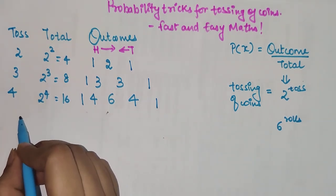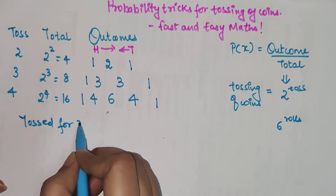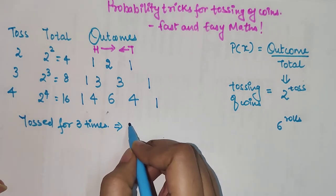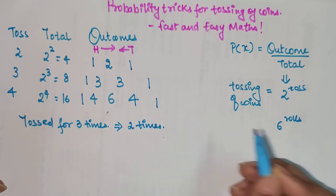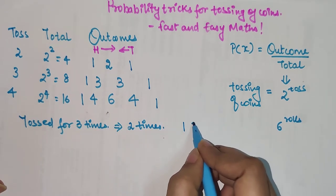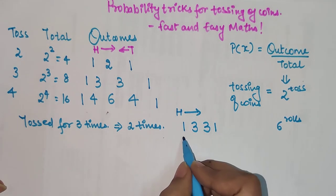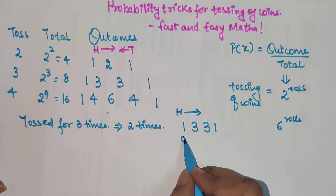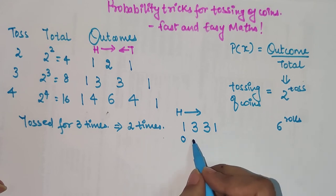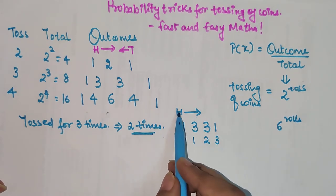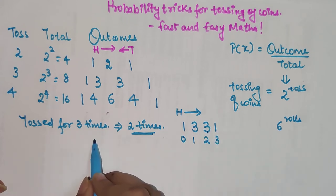Let's say a coin is tossed three times and we need the probability of getting heads exactly 2 times. The outcomes for three tosses are 1, 3, 3, 1. Reading left to right for heads: zero heads, one head, two heads, three heads. The outcome for two heads is 3, and the total is 8, so the probability is 3 upon 8.